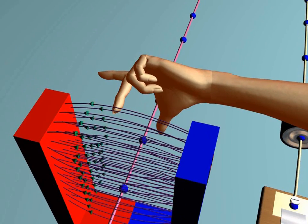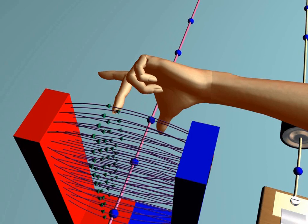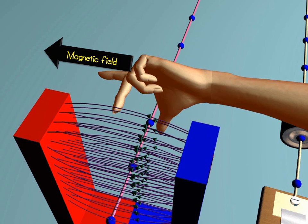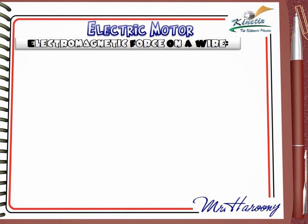Fleming's Left Hand Rule states that if the first finger aligns with the direction of the magnetic field, pointing from north to south, and the second finger points in the direction of the conventional current — from positive to negative — then the thumb will show the direction of the force that pushes the wire. To study this part you need good 3D imagination.